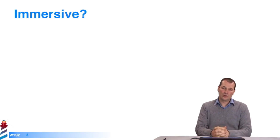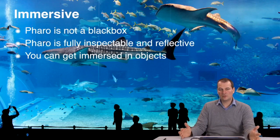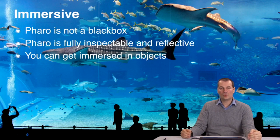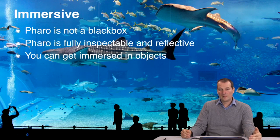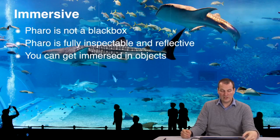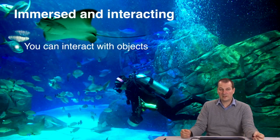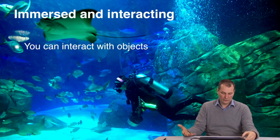If you look at the title of this MOOC, it includes the word immersive. Why is this? Because Pharo isn't a black box. The entire system is fully inspectable, so you can go and see how it's implemented. And Pharo is reflective — it has a representation of itself that you can use in order to understand it. This means you can get completely immersed in a world of objects. I like this metaphor of the fish tank: a language is usually a black box, but Pharo is a fish tank where you can see the objects and constituents of the system itself, and you can also dive into the tank and interact with the objects.